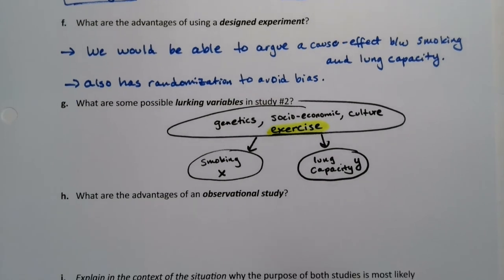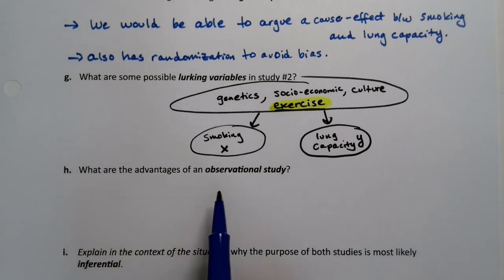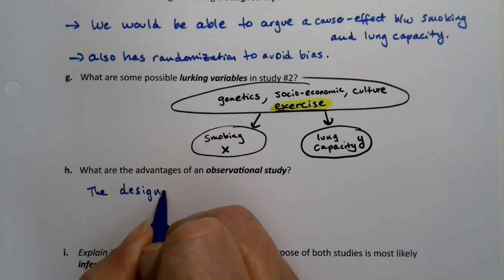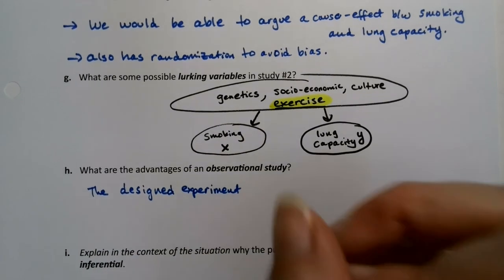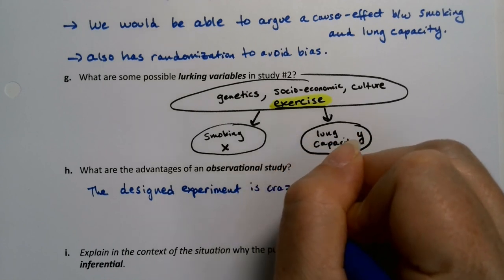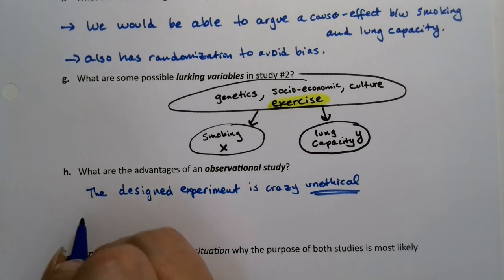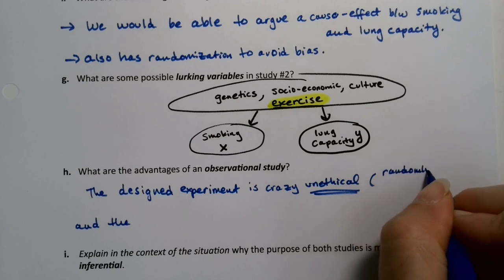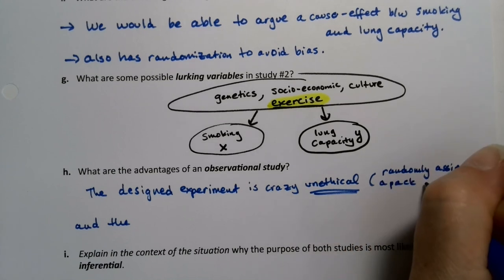What are the advantages of an observational study? The observational study is not unethical. The designed experiment is unethical — it's unethical to force people to smoke. Randomly choosing someone to smoke a pack a day for 10 years — randomly assigning a pack-a-day smoking habit — if you weren't addicted before, it would make you addicted for 10 years.